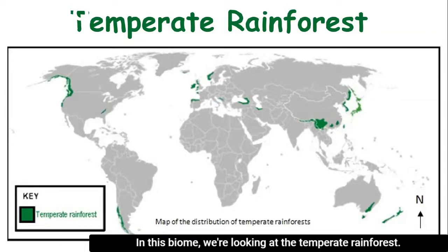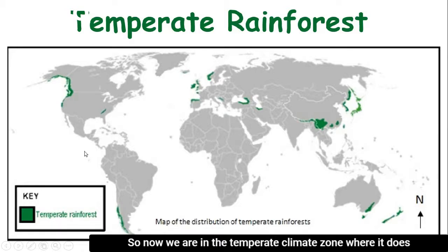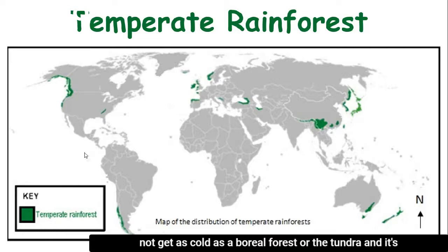In this biome, we're looking at the temperate rainforest. We are in the temperate climate zone where it does not get as cold as a boreal forest or the tundra, and it's not as warm as a tropical environment.